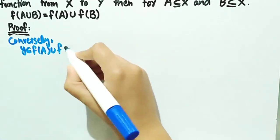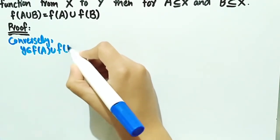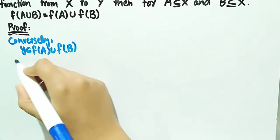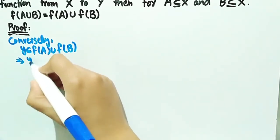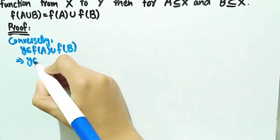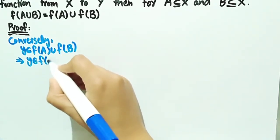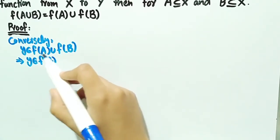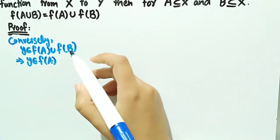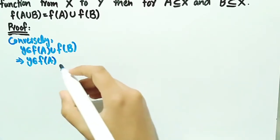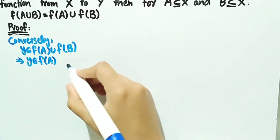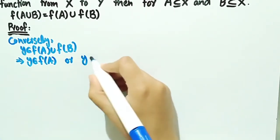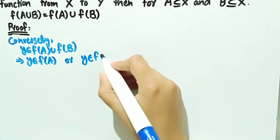Now for equation number 2: since y belongs to f of a union f of b, we can write y belongs to f of a or y belongs to f of b.